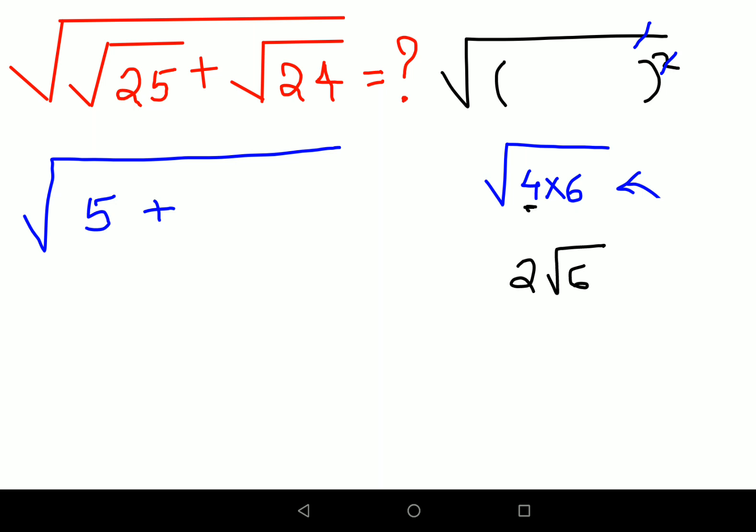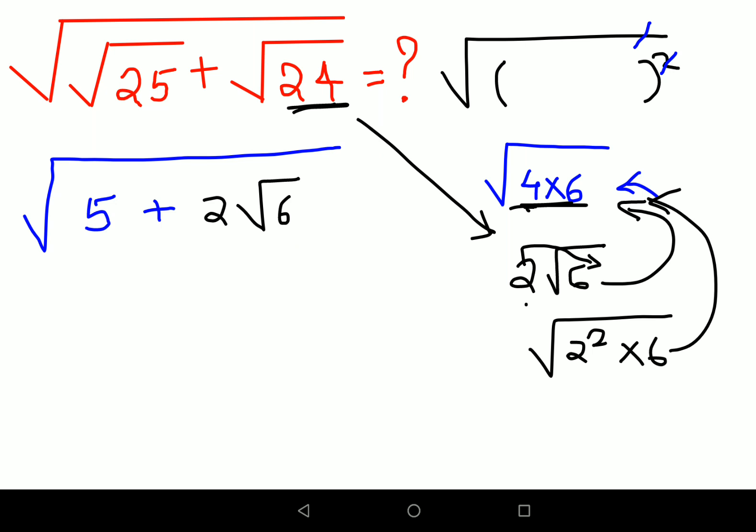if you get confused, I want you all to just go back to this step. Means you try to write, put this 2 inside the root. When you do that, when you put the 2 inside the root, it becomes 2 square into 6, which is eventually getting you this value. So like I said, this particular root 24 can be written as 2 root 6.